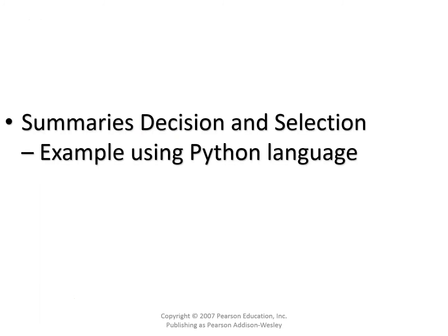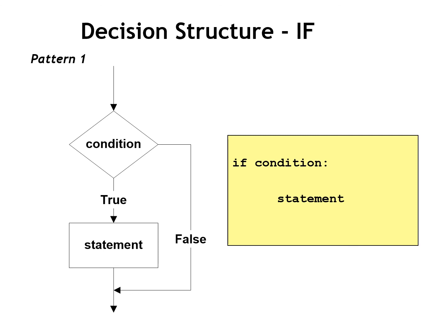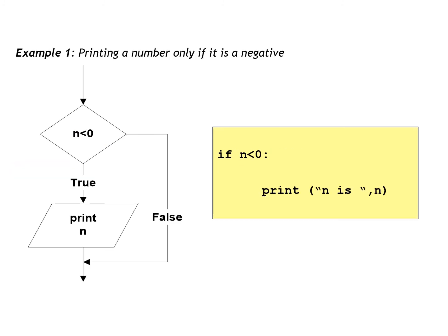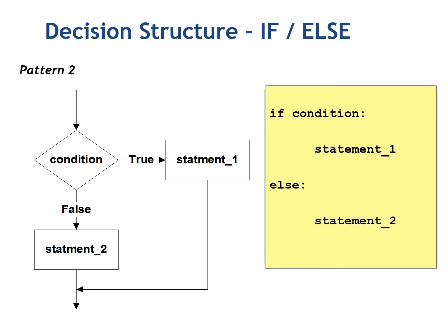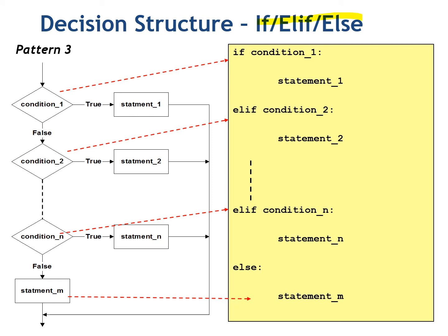Summary of decisions and selections using Python. For a simple if, if the condition is true you proceed with the statement, otherwise it is skipped. For if-else, it is two-way selection — true executes statement one, false executes statement two. For if-elif-else, you have multiple conditions checked in sequence until one is fulfilled, then the corresponding statement executes.